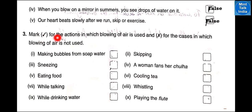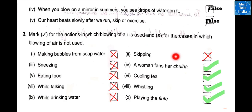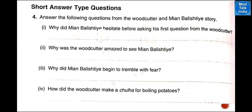Question number 3: mark a tick for the actions in which blowing of air is used and a cross for those in which blowing of air is not needed. For all the activities for which we blow air, I have ticked in green. Question number 4: answer the following questions from the woodcutter and Mian Balishti story.